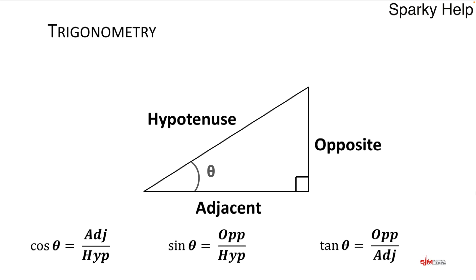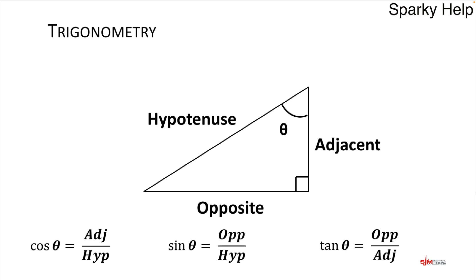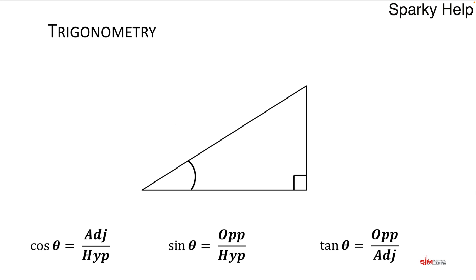Now if we move the angle to a different location, the hypotenuse will stay the same because it's always the longest side. But the opposite and the adjacent swap sides, because the adjacent is always the one next to the angle itself and the opposite is always the one opposite. So let's have a look at an example.